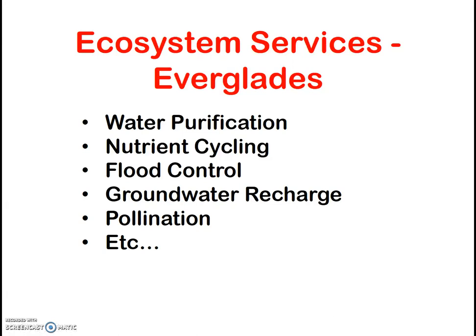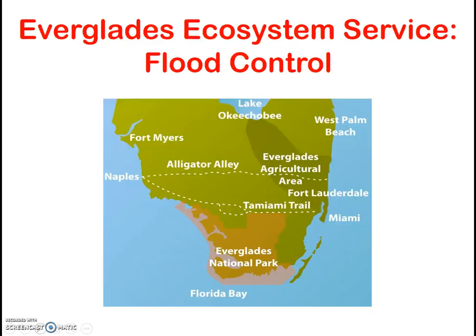Unfortunately, many of these ecosystem services are not well understood and are not always included in economic analysis for development. And generally, if we were to put dollar values on these services, the values would be staggering. Interestingly, humans drained much of the Everglades in the 1900s, in part for flood control. Later, we realized that the Everglades were actually very effective flood control, so now we are trying to restore the ecosystem and reverse the damage that we did.